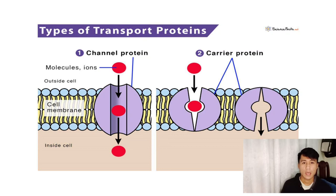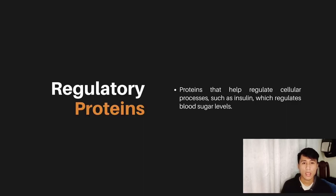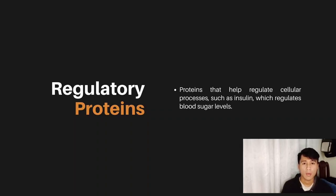Next is regulatory proteins — proteins that help regulate cellular processes, such as insulin, which regulates blood sugar levels. Let's say there is a factory that produces a certain product. The enzymes in the cell are like the workers in the factory. The product needs to be made in just the right amount and at just the right time. The regulatory proteins act like a manager that tells the workers when to work and how much to produce.